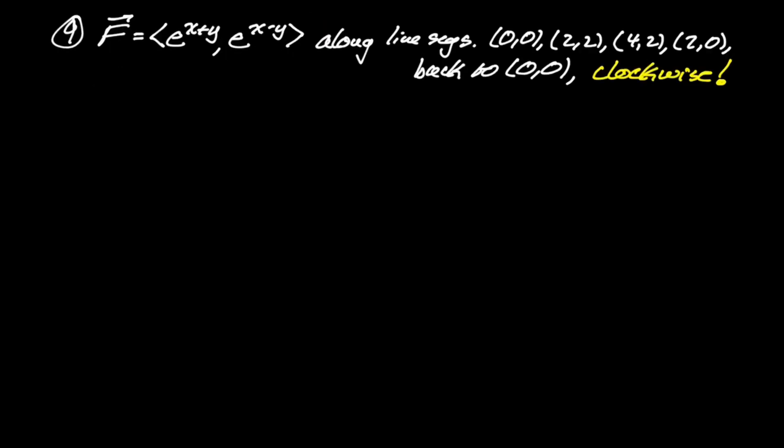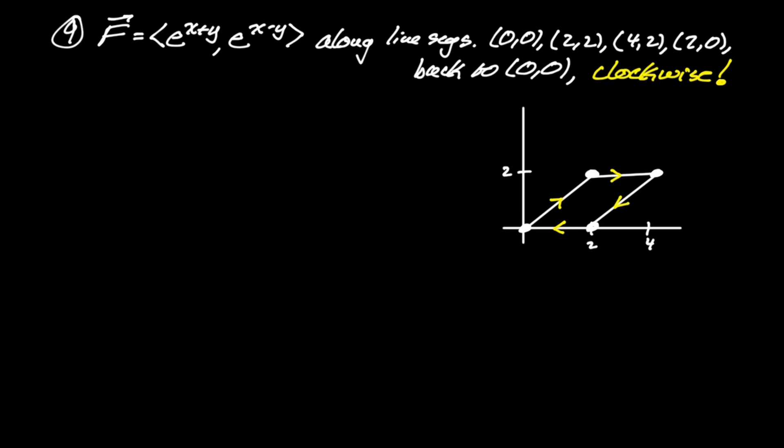Number nine: our vector field is F = (e^(x+y), e^(x−y)). We're going along the line segments connecting (0,0) → (2,2) → (4,2) → (2,0) → (0,0), and we're going clockwise. Going clockwise is not counterclockwise, and Green's theorem requires counterclockwise — so we handle this like a reversed bound in Calc 1: throw in a negative sign. Sketching the region, the boundary curves are y = x and y = x − 2. This is a horizontally simple region.